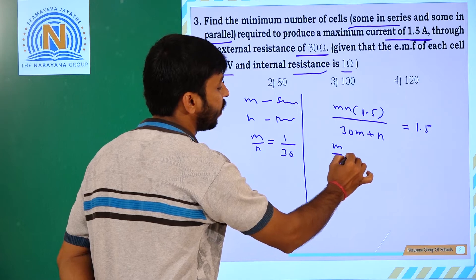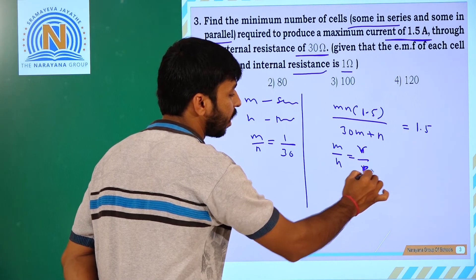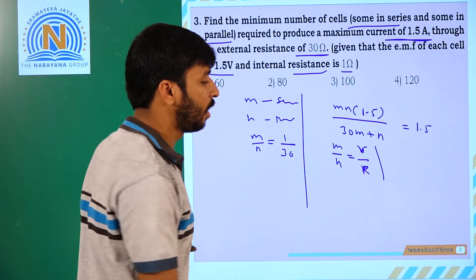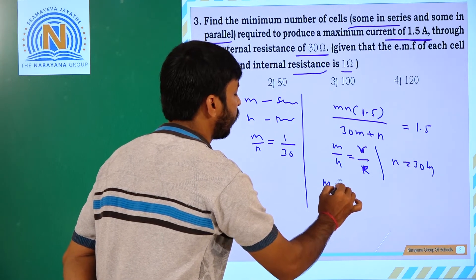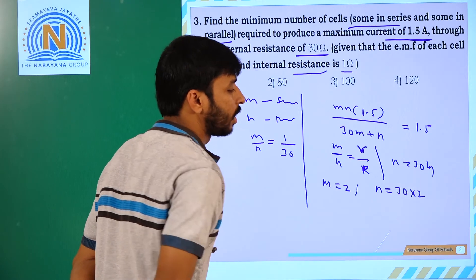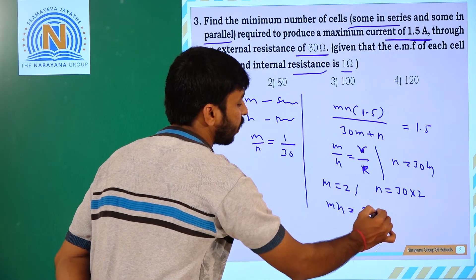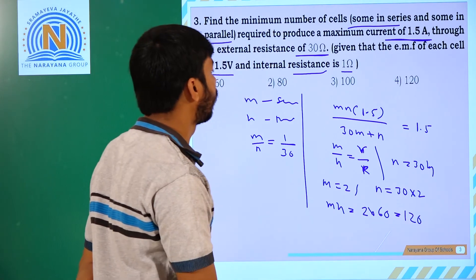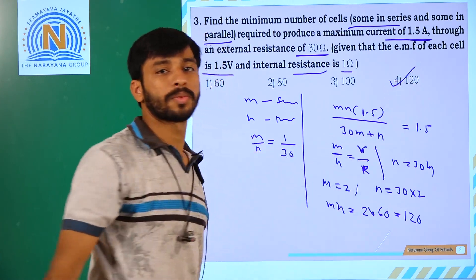M by N is equal to small r by capital R, internal resistance by external resistance. So N is equal to 30M. We get M is equal to 2 and N is equal to 30 into 2, that is 60. So MN is equal to 2 into 60, equal to 120. The fourth option is correct option.